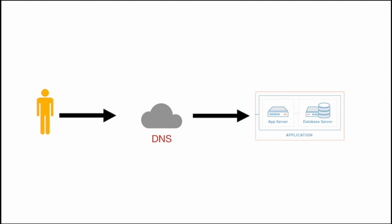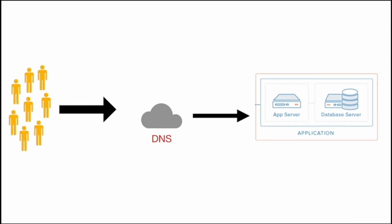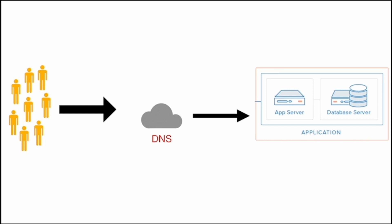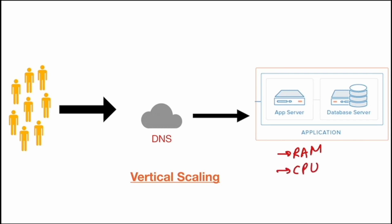When the load on the system increases, we need to scale the system. The first and easiest solution available is vertical scaling — increasing the resources available to the machine, for example increasing the amount of RAM or CPU cores. However, there is a problem with vertical scaling: we can only use it up to a certain threshold, as there is a limit on the amount of RAM and CPU cores that can be allocated to a single machine.